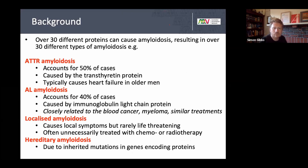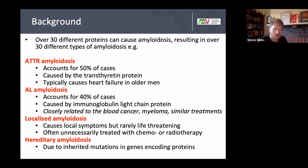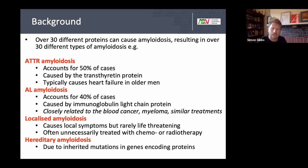Transthyretin stands for 'transports thyroid and retinol.' TTR or transthyretin amyloidosis typically causes heart failure in older men. AL amyloidosis is due to the misfolding of excessive monoclonal light chains, as seen in myeloma or MGUS. It is absolutely vital that whenever we see a potential new cardiac amyloidosis case, we always look for a monoclonal protein — using serum electrophoresis, serum free light chains, and urine electrophoresis looking for Bence-Jones protein.